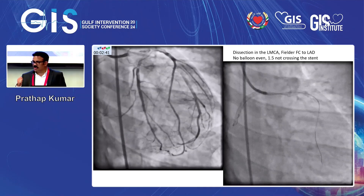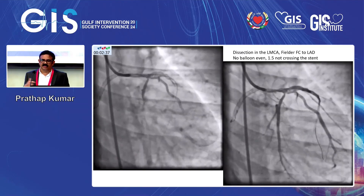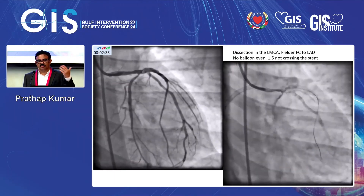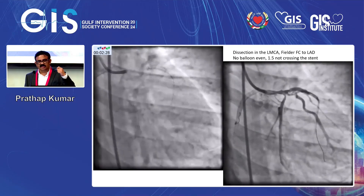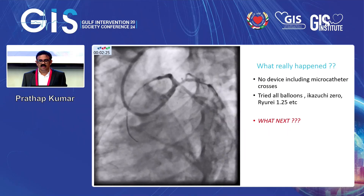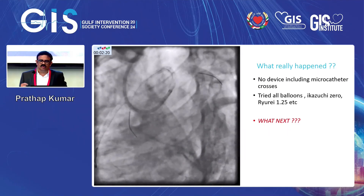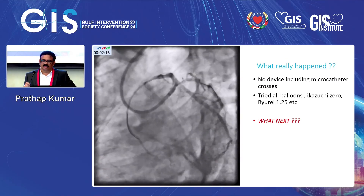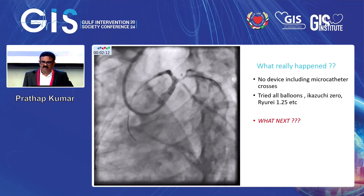Then I saw a dissection in the left main. The catheter had gone inside — a dissection in the left main — and there was already a stent done outside for the LMC, LAD, and circumflex. The catheter went inside and dissected it. No balloon could go inside. I tried with a wire inside — the wire went in — but no device including a microcatheter would cross. Tried all balloons: Ekosushi 0, Ryuri 1.25. Tried all wires. What next?